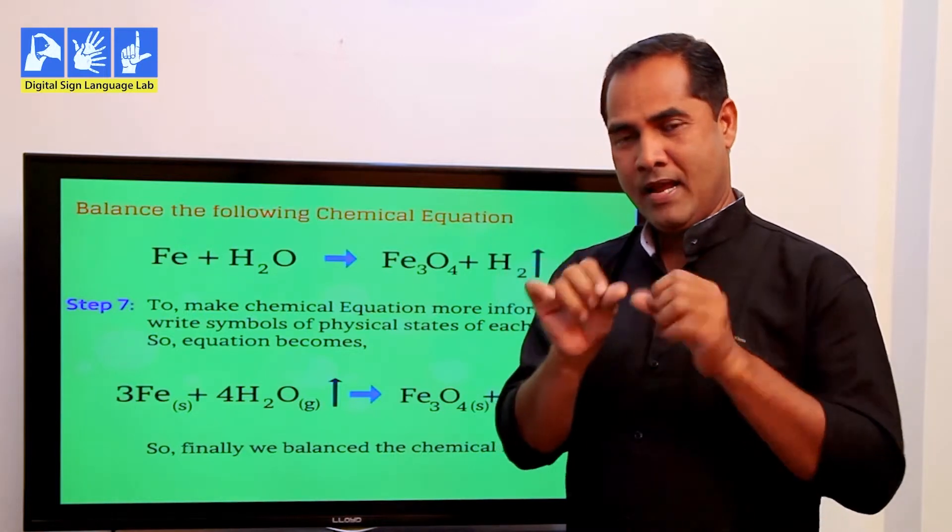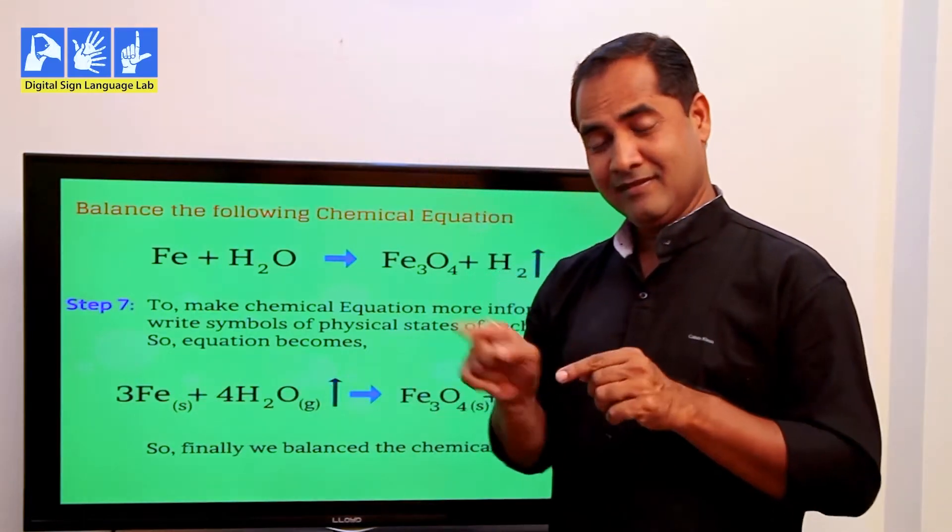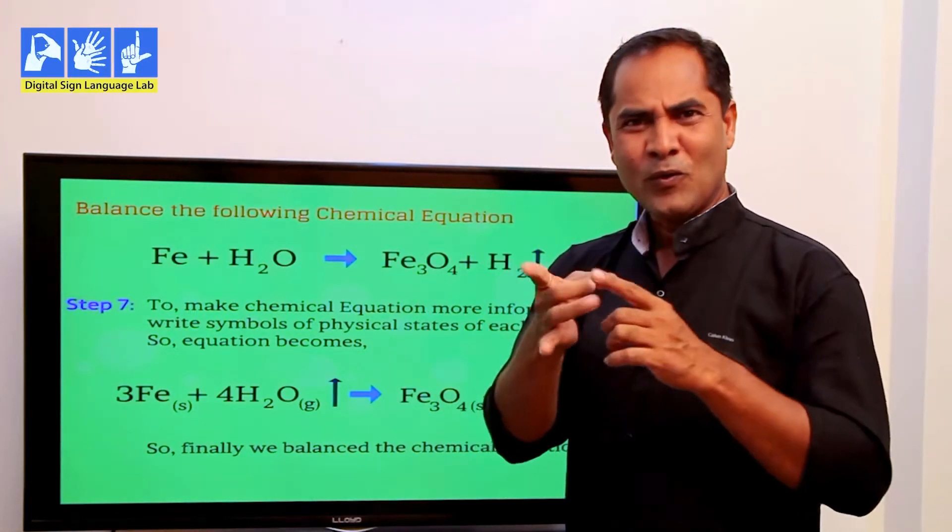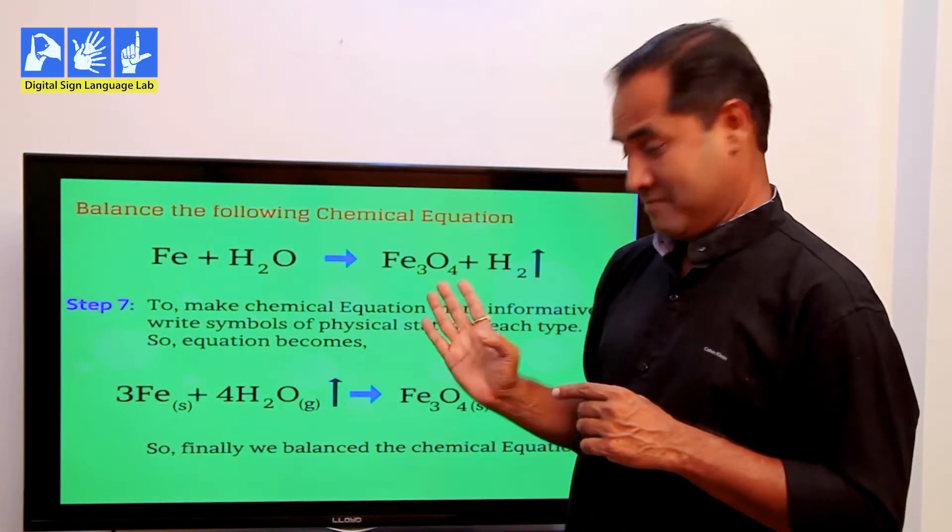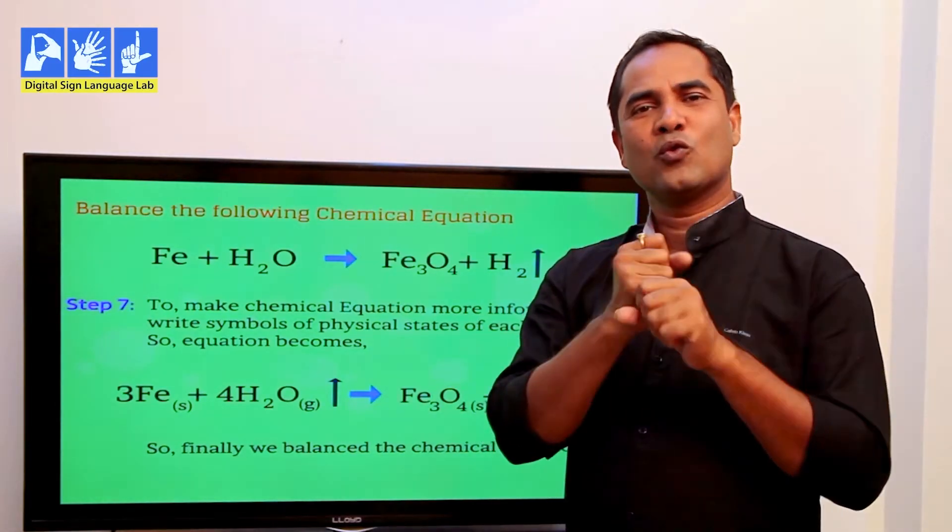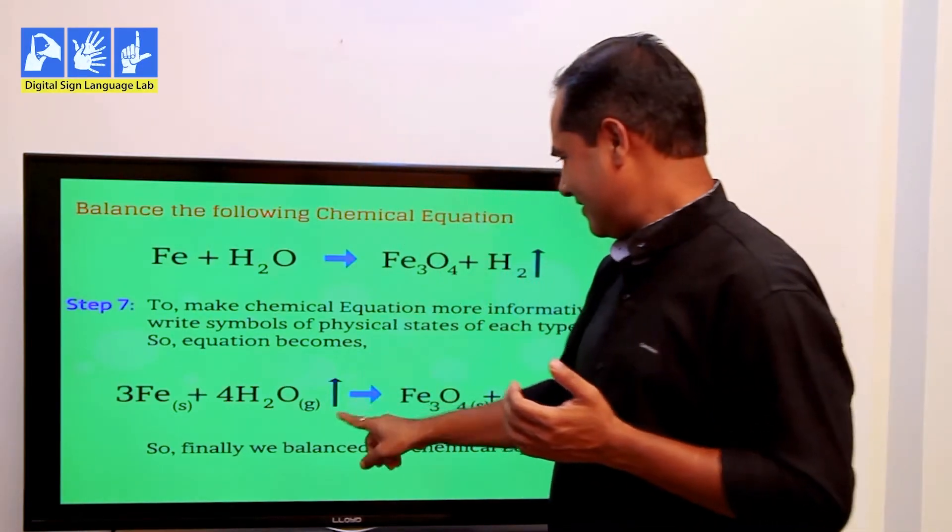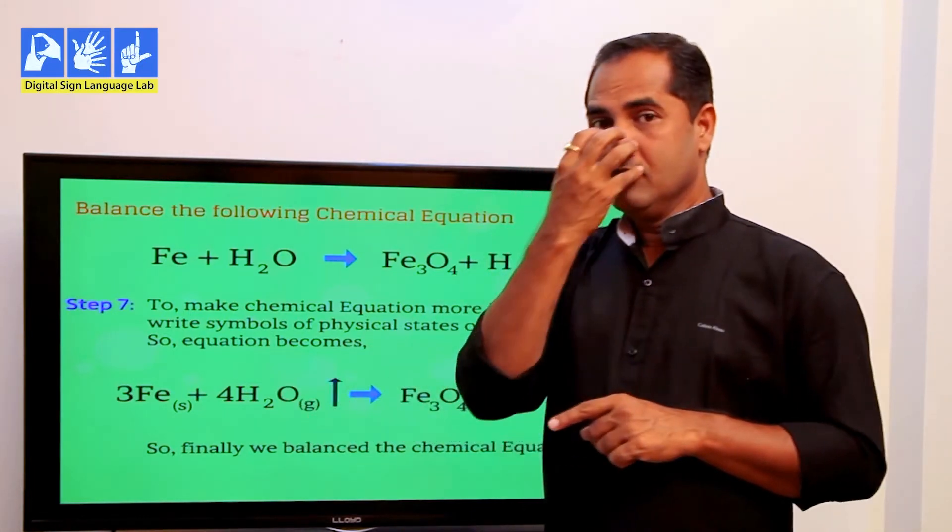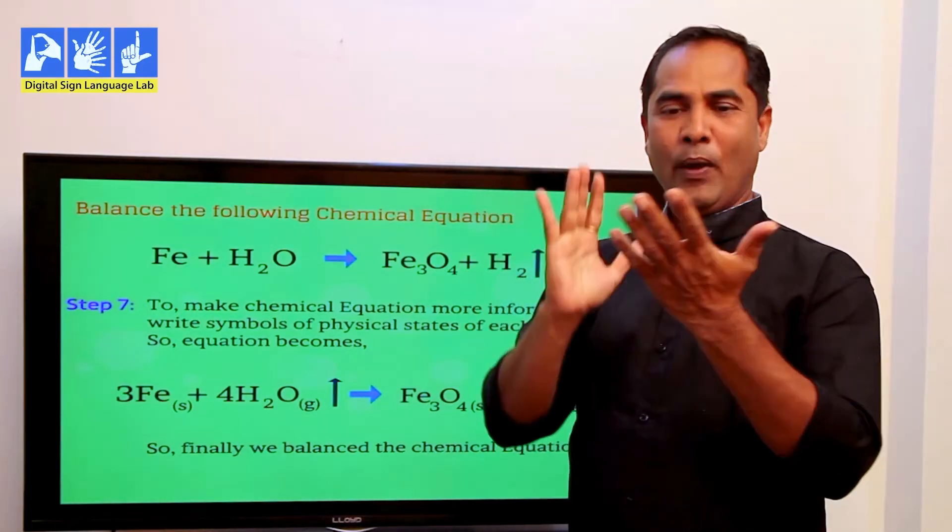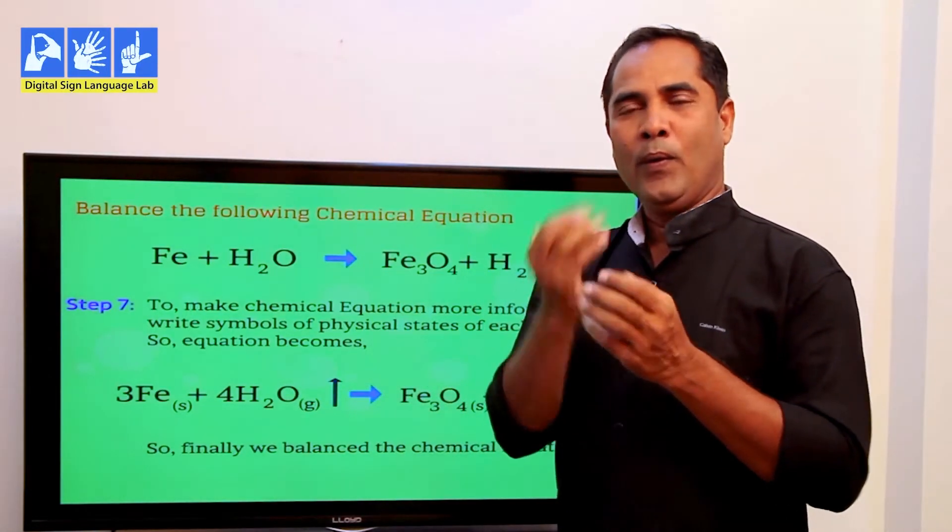Now in a chemical equation, there are certain terms, certain notations that we use. So here you see S in bracket. What does this S stand for? So iron is a metal, which is a hard solid metal. So S stands for solid. Now in this H2O, you see G in the bracket. That stands for gas. So hydrogen and oxygen both are gases, as you know. So G stands for gas.